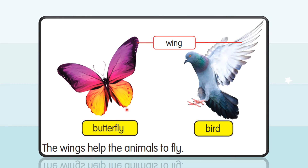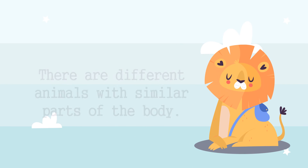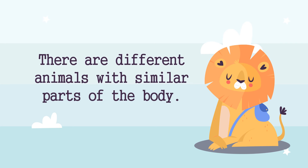Both butterflies and birds have wings. The wings help the animals to fly. Now we move on to: we are similar. There are different animals with similar parts of the body.